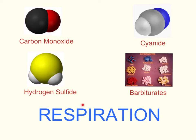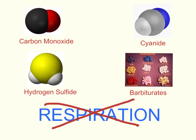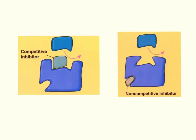Respiration is a critical process for cell survival because it's the process by which cells produce energy. These poisons are able to inhibit enzymes and prevent respiration from occurring, which is what makes them so dangerous. The poisons we've talked about are inhibitors.